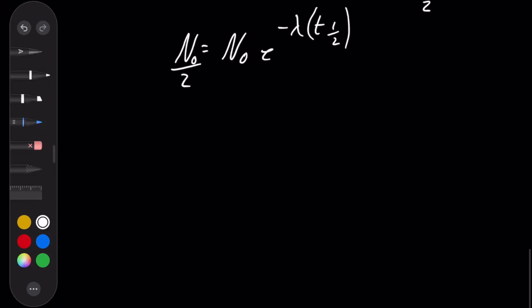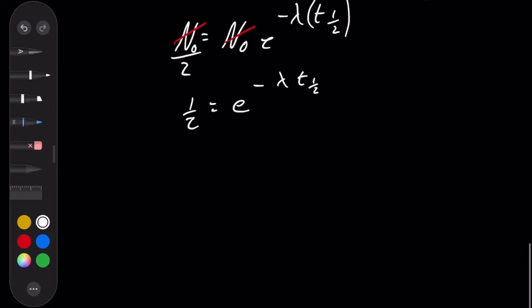And now let's do some solving and some simplifying. We can see that the n naughts nicely cancel. So I've got a half equals e to the minus lambda t a half. That's one half. And let's have a go at solving this.